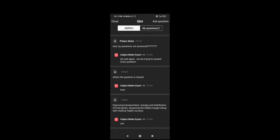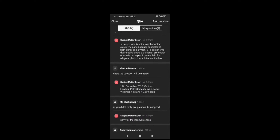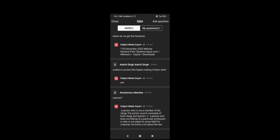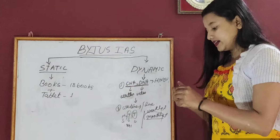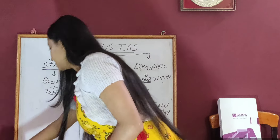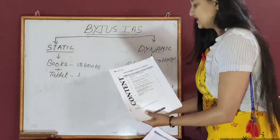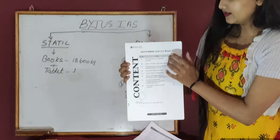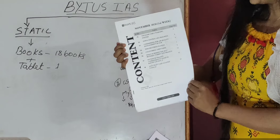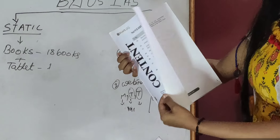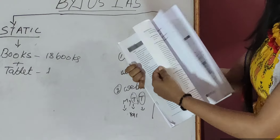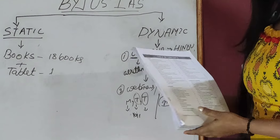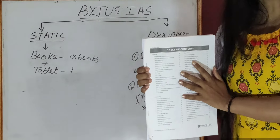The live webinar sessions are conducted on the Zoom platform. Teachers change from time to time. During the webinar, students post questions which you can check the answers to in the 'My Questions' tab, and there are around four subject experts to answer queries during the live webinar. The PDF handouts we receive — for example, the first week of November 2021 and the full month of September — can be printed out.